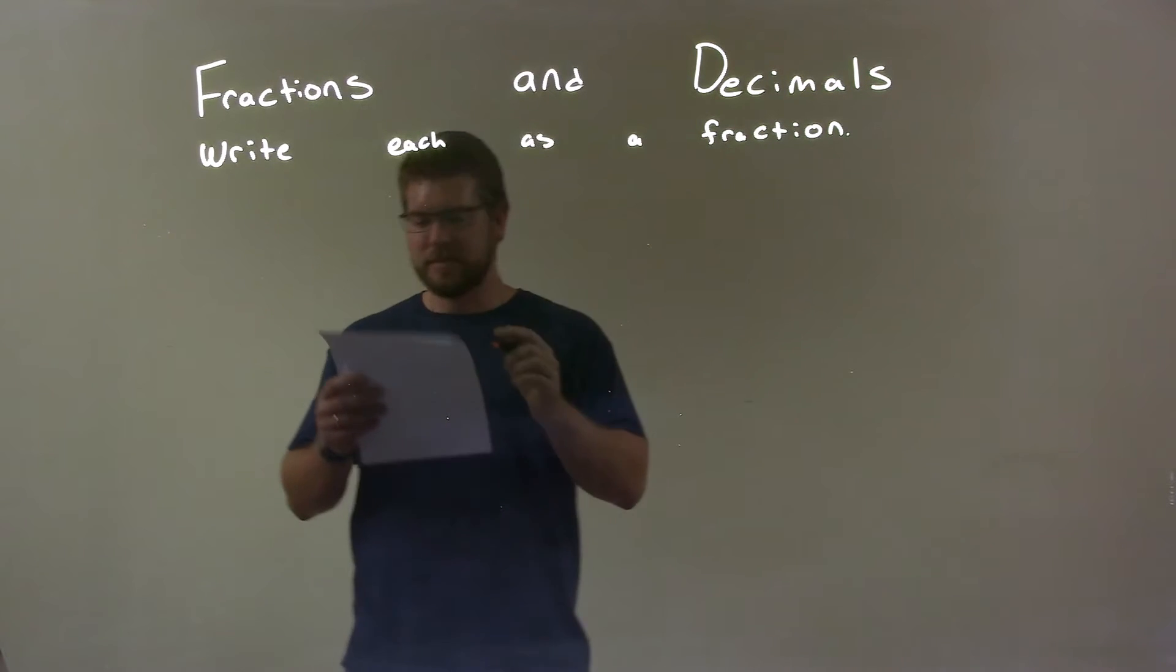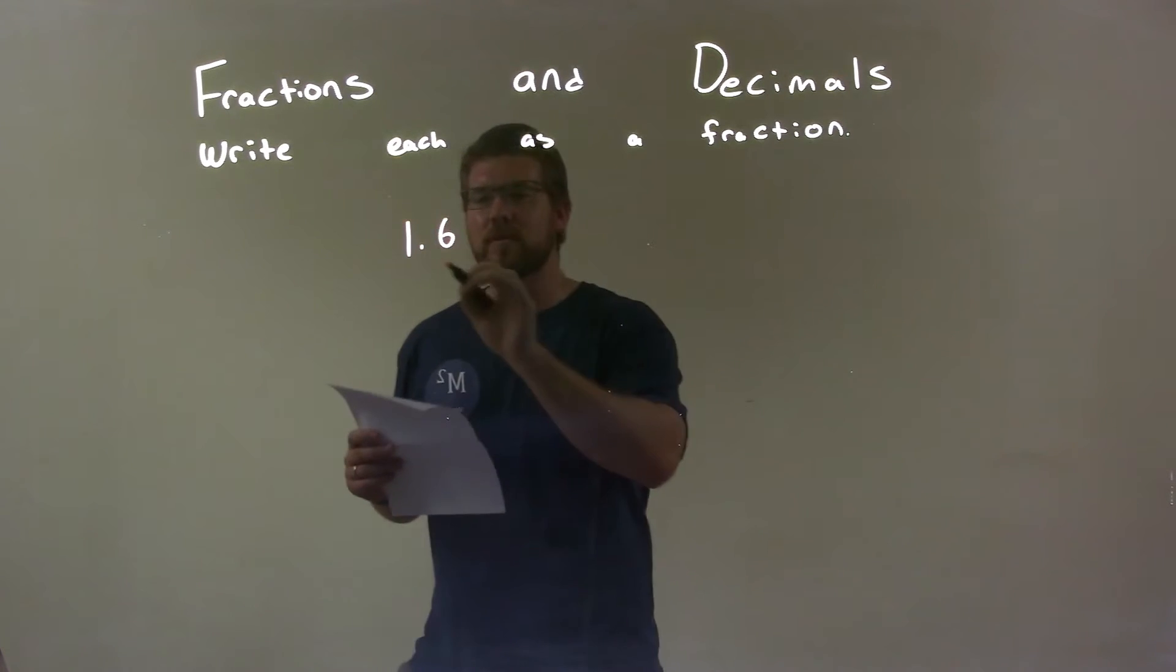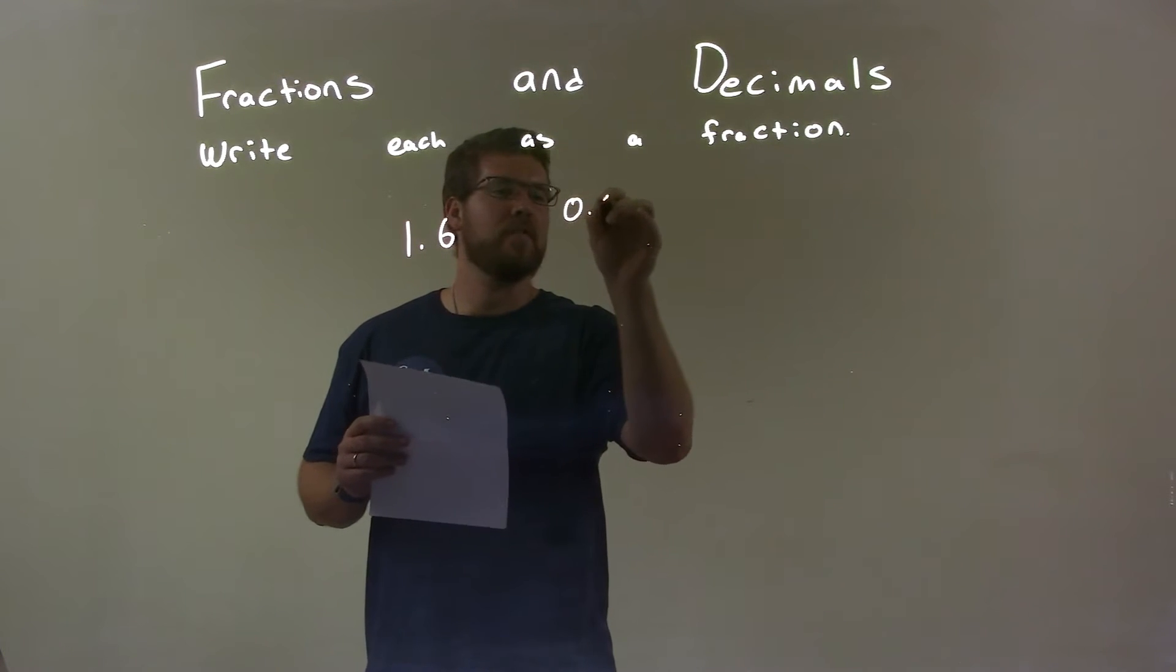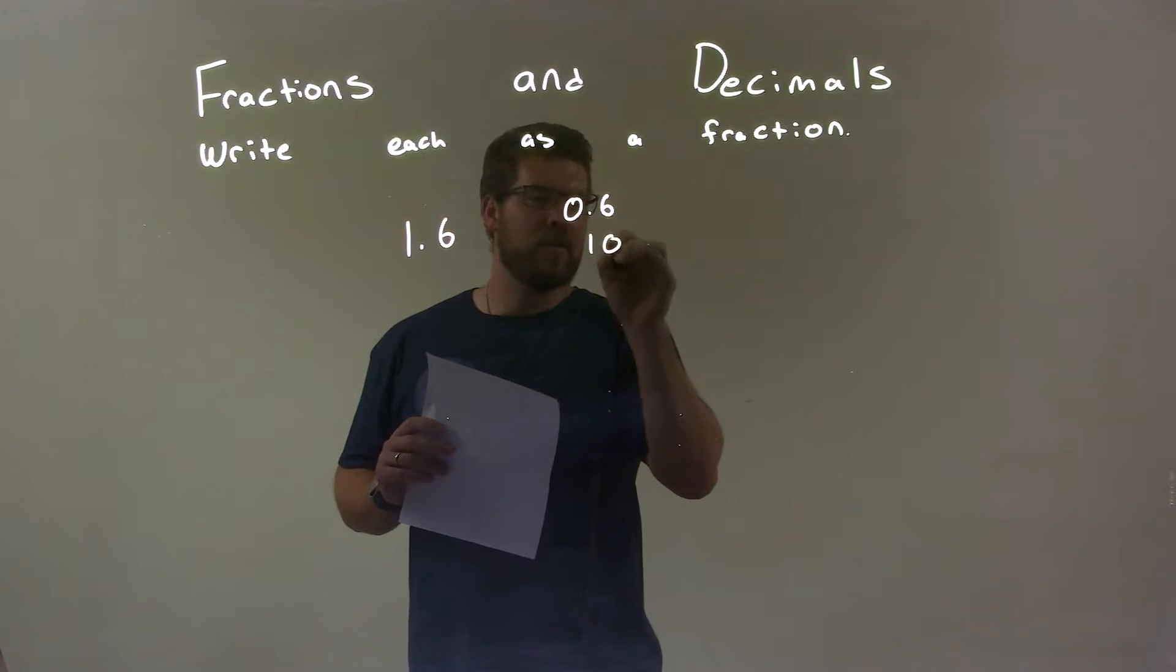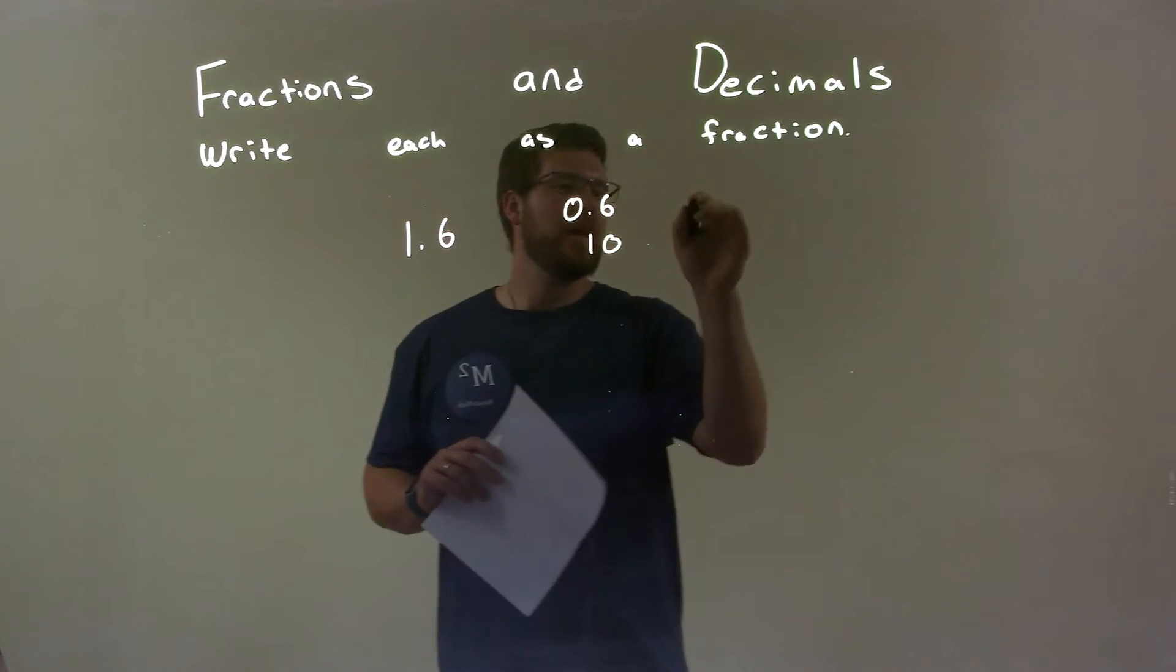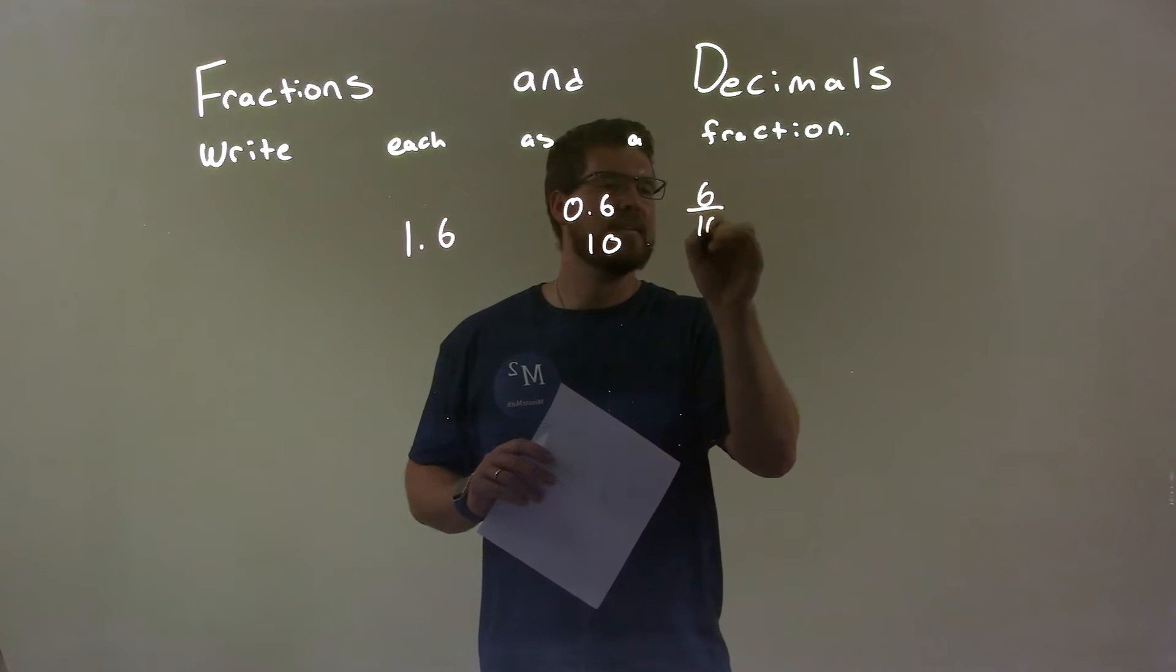So if I was given this decimal, 1.6, I deal with just the 0.6. I put a 1 where the decimal is, and I have a 0 with a 6, so there's 10. So now that's the same thing. 0.6 is 6 divided by 10.